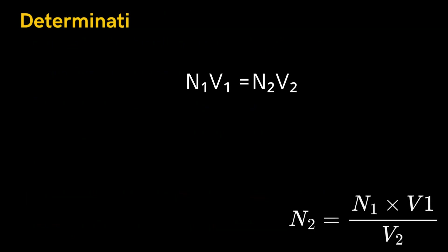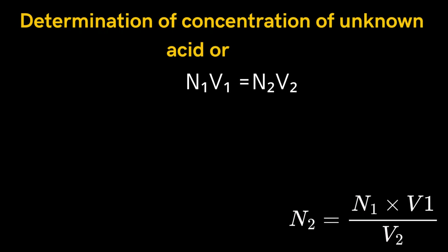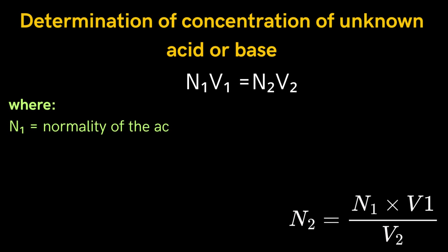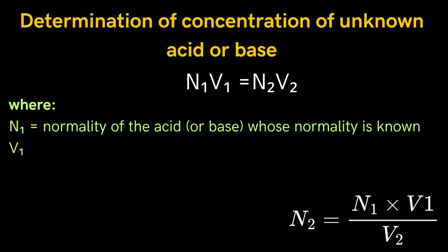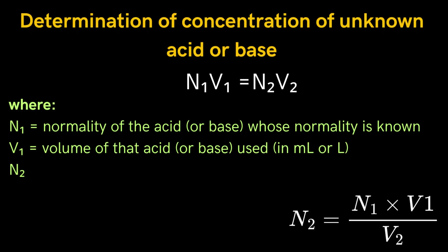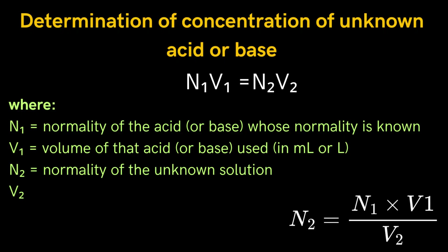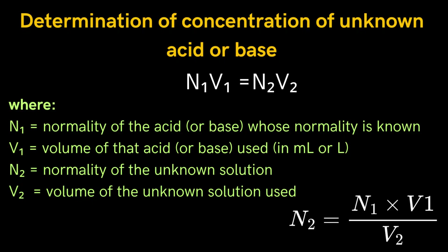The next step in titration is determination of concentration of the unknown acid or base, which can be determined using the formula N1 × V1 = N2 × V2, where N equals normality of the acid or base of known normality, V equals volume of that acid or base used in ml or L, N2 equals normality of the unknown solution, and V2 equals volume of the unknown solution used. Thus, the normality N2 = N1 × V1 ÷ V2.